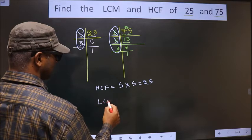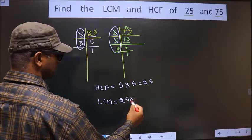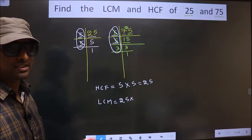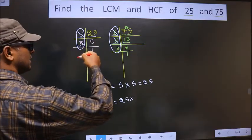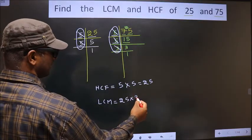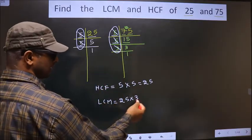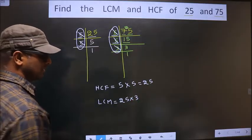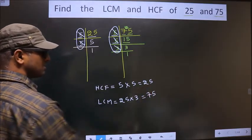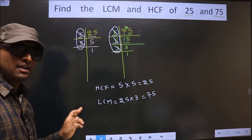Now our LCM. To the HCF you should multiply by certain numbers. How do we decide those numbers? See. Here no number is left out. Here 3 is left out. So you cut 3 and write here. So no number is left out here as well. So this is your LCM, that is 25 into 3, 75. So this is LCM and this is your HCF. Am I clear?